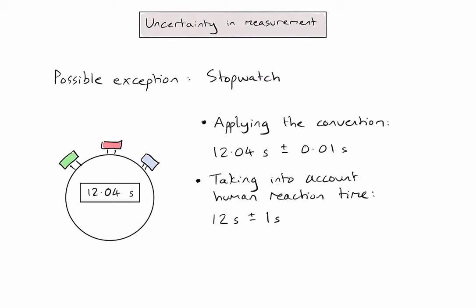And notice by changing that uncertainty to plus or minus one second, and therefore having no decimal places in the uncertainty, I need to make sure that the recorded measurement also has no decimal places in this example. And this is now a much more appropriate measurement, given the limitations in human reaction time. Always make sure to state this assumption and change if you're including this in a lab report.